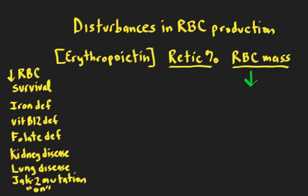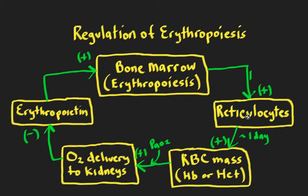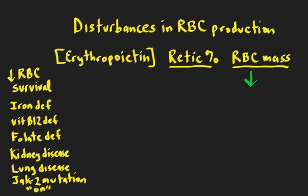Going back to the feedback system: if the red blood cell mass goes down, we're going to have decreased oxygen delivery to the kidney, and then we're going to have increased erythropoietin. So erythropoietin would go up. And because erythropoietin would be stimulating the marrow and increasing red blood cell production, we'd have an increase in reticulocytes as well. That would be the appropriate response to a decreased red blood cell mass, helping to try to stabilize the red blood cell count.